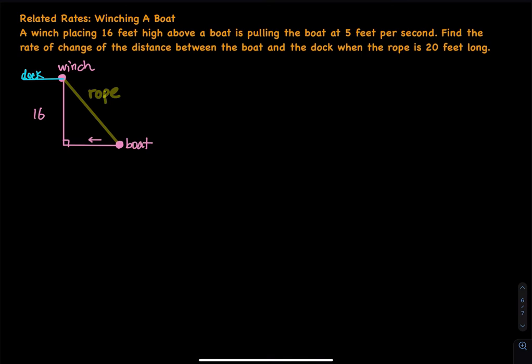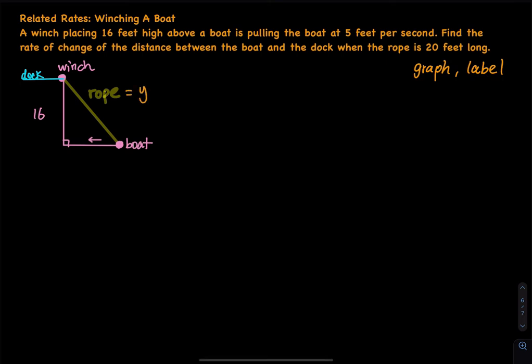The first step is the graph. We already have the graph, and you also need to label it. So we have a rope — let's call the distance of the rope y. And then the distance between the dock and the boat is x.